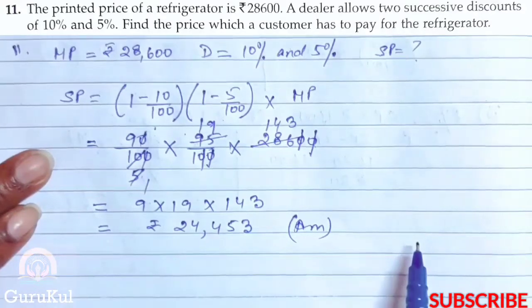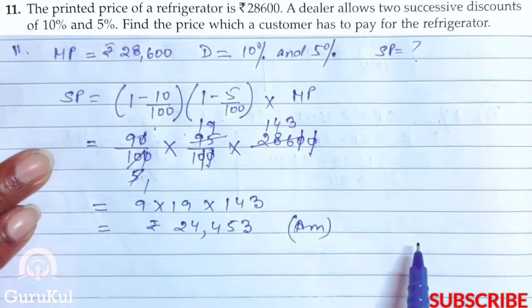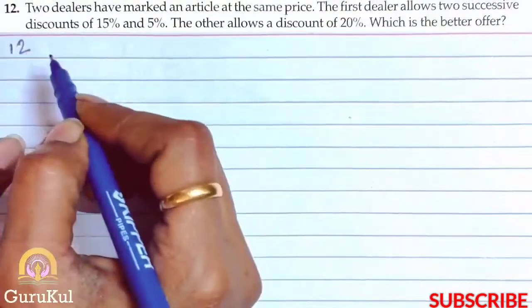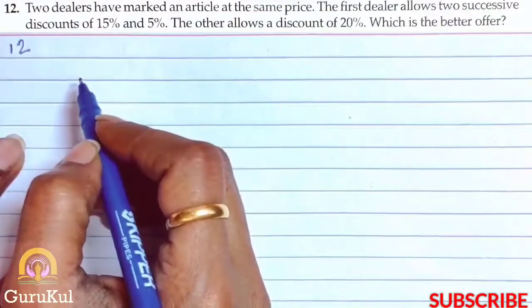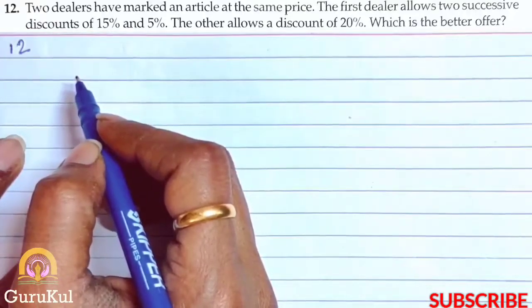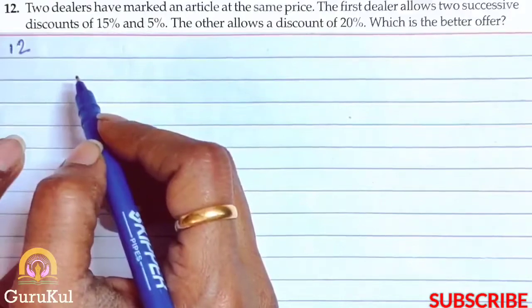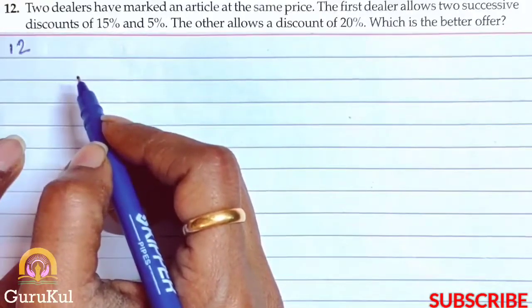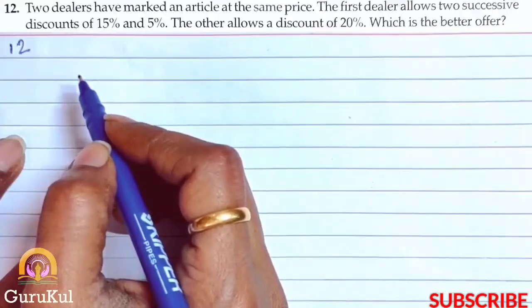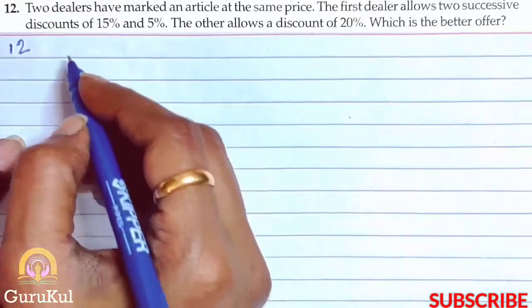Please don't forget to like, share, and subscribe to my channel if you really enjoy watching it. Question number 12: two dealers have marked an article at the same price. The first dealer allows two successive discounts of 15% and 5%, whereas the other one allows a single discount of 20%. Which is the better offer?